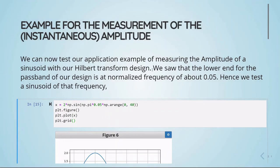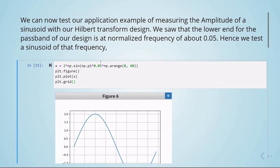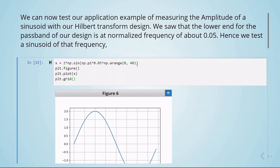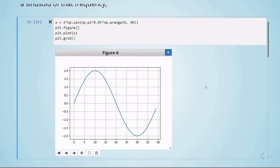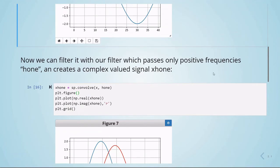Now, we can go back to the example for the measurement of the instantaneous amplitude of a sinusoid, and we can test our application example using our Hilbert transform design. We saw that the lower end for the passband of our design is at a normalized frequency of about 0.05. Hence, we test a sinusoid of that frequency. Here, we are constructing a sinusoid of that frequency and its plot here. Now, we can filter it with our filter, which passes only positive frequencies, H1, and creates a complex valued signal, XH1.